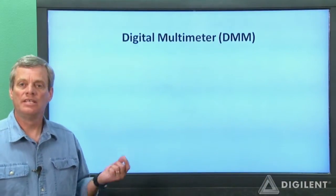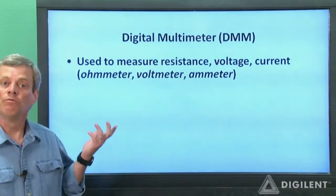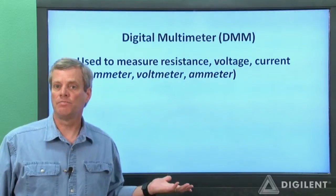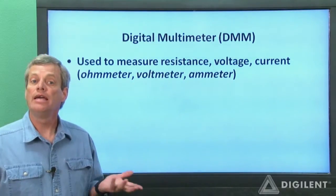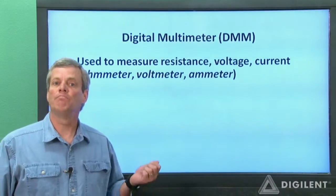As I said earlier, DMMs are used to make a variety of measurements. For example, voltage, current, and resistance are all really common things to measure using a digital multimeter. In order to make the kind of measurement you want, you need to set up the DMM to make that measurement.